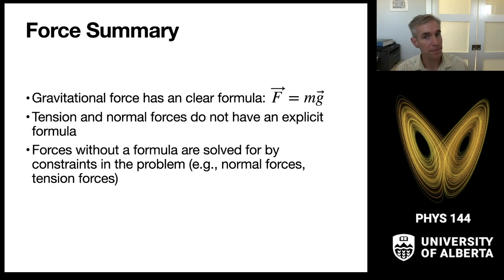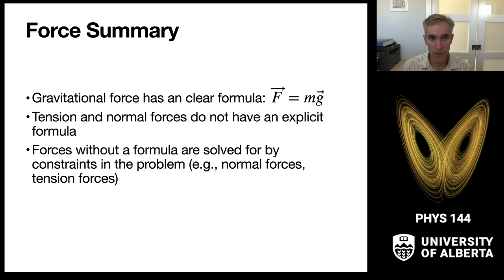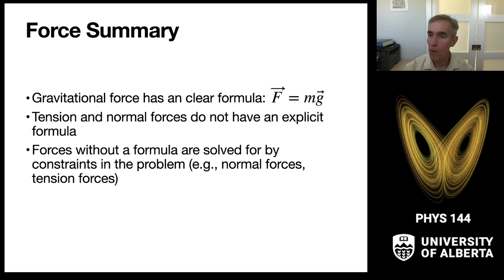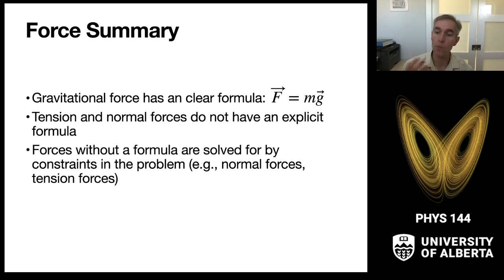To summarize: gravity has a clear formula near Earth's surface — force equals mass times local gravitational acceleration g. Tension and normal forces do not have formulas; they are constraint forces set by the problem — what must happen to make the observed situation true. We can analyze and determine tensions and normal forces from the physics within the problem.